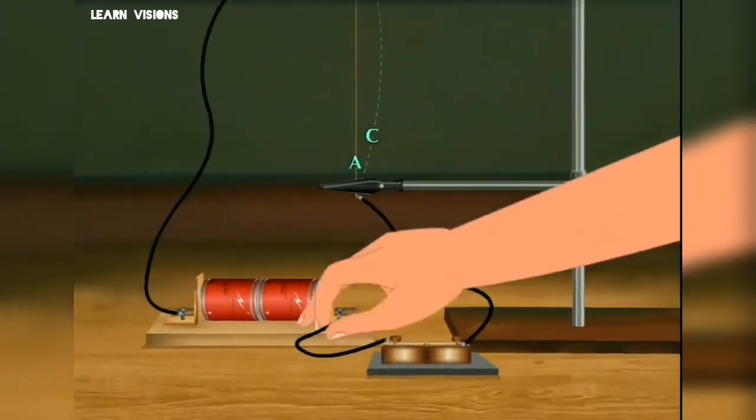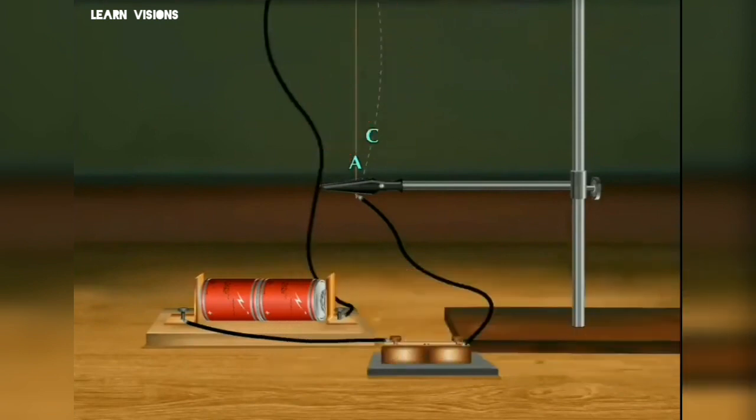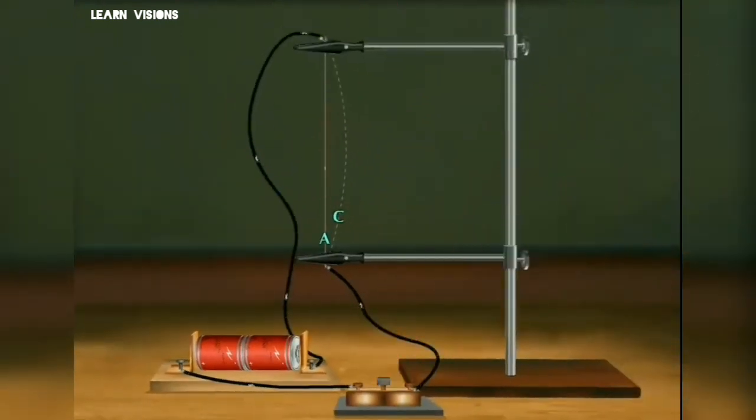Now we will change the direction of current by changing the ends of battery. After closing plug key the current will flow from bottom end to top end of the copper wire.